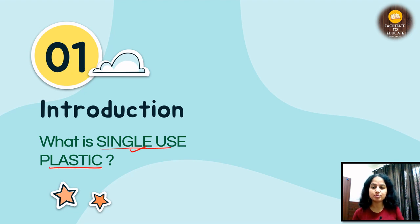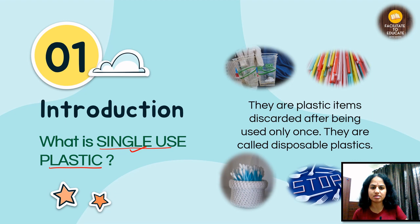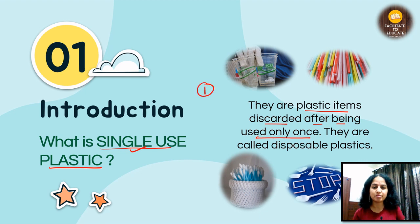The answer is very simple — you will understand it easily from the words themselves. These are plastic items discarded after being used only once. After using them once, you discard them — we call them single-use plastic. They are also called disposable plastic, like disposable plates or glasses that you know from general life.